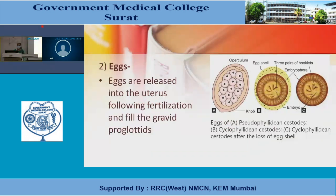Comparing egg types: in Pseudophyllidian cestodes there is an operculum; in Cyclophyllidian cestodes there is no operculum. Before loss of egg shells, the embryo has three pairs of hooklets. Cyclophyllidian eggs contain the embryo and egg cells covered by two layers.